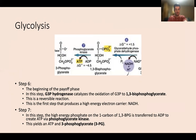In step seven, the high-energy phosphate on carbon one of 1,3-BPG is transferred to ADP to create ATP by phosphoglycerate kinase. In step seven we are creating ATP: we take one of those phosphate groups from 1,3-BPG and put it onto ADP using a kinase. This yields 1 ATP and leaves us with a molecule called 3-phosphoglycerate, or 3-PG.